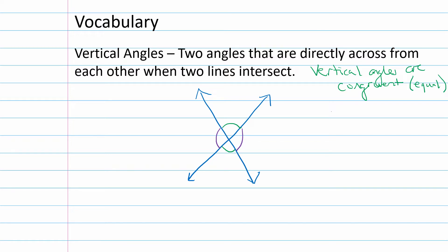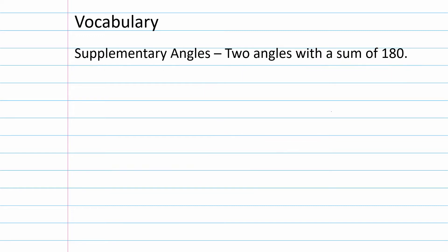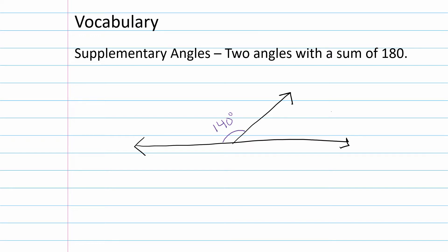Let's move on to supplementary angles — two angles that have a sum of 180 degrees. For example, if one angle is 140 degrees and the other is 40 degrees, then 140 plus 40 equals 180 degrees, so they are supplementary angles.